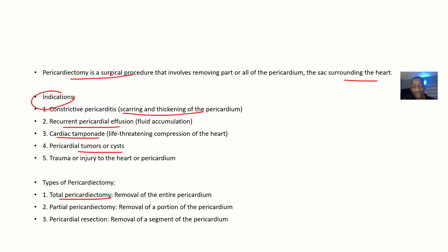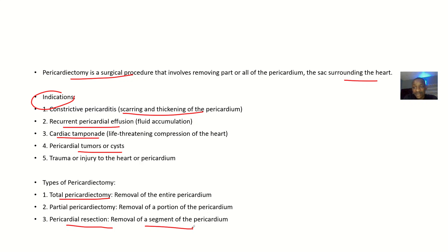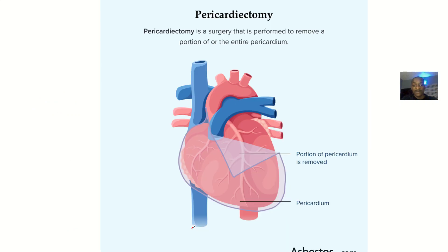For the types of pericardiectomy: you can do a total pericardiectomy where you remove the whole pericardium; a partial pericardiectomy where you remove just a portion; or a pericardial resection where you remove a specific segment — for example, the segment covering the left ventricle, the right ventricle, or another specific area.